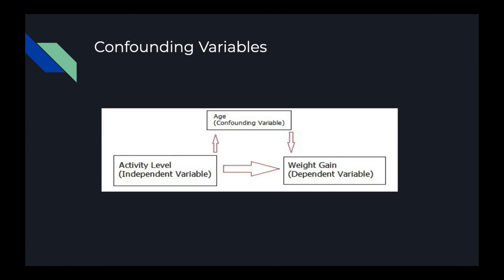A further example of a confounding variable: we are looking at the effect of activity levels — like doing exercise — on weight gain. However, if our research has a wide age range, and one participant is 18 years old while another is 55, age could become a confounding variable. As people grow older it becomes more difficult to lose weight, so the differences in the DV may not be because of activity level but because of differences in age.